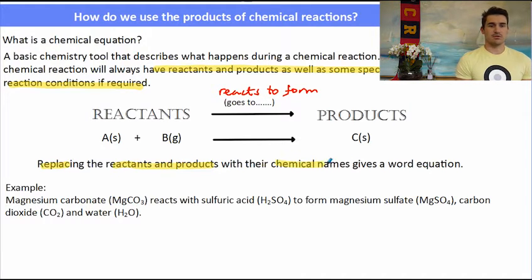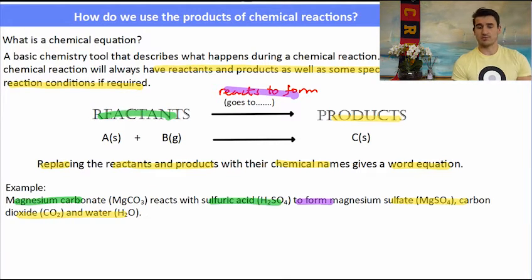If we replace the reactants and the products with their chemical names we give a word equation. So for instance, magnesium carbonate reacts with sulphuric acid to form magnesium sulphate, carbon dioxide and water. So the reactants are magnesium carbonate and sulphuric acid. The word reacts to form is what separates the reactants and the products. The things on the other side of the arrow would be magnesium sulphate, carbon dioxide and water.